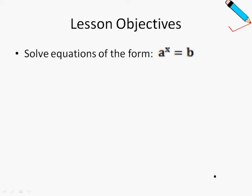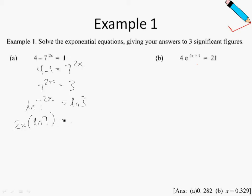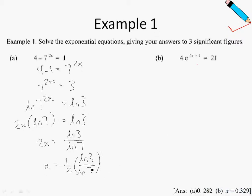The lesson objective is very simple for this chapter — just solve equations that look like the form a^x = b. In Example 1, we solve for x. We shift negative 7^(2x) to the right-hand side and 1 to the left-hand side: 4 minus 1 equals 7^(2x), so 7^(2x) is just 3. Taking ln on both sides: ln 7^(2x) equals ln 3. The 2x is brought to the front: 2x times ln 7 equals ln 3. So 2x is ln 3 divided by ln 7, and x is just half times ln 3 over ln 7. Keying this into the calculator and rounding to 3 significant figures gives the answer.